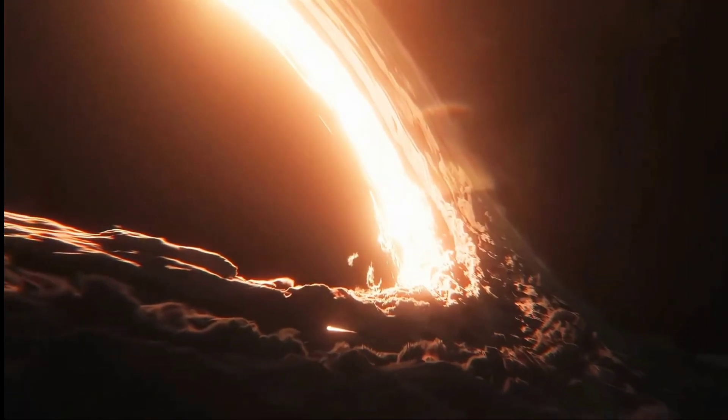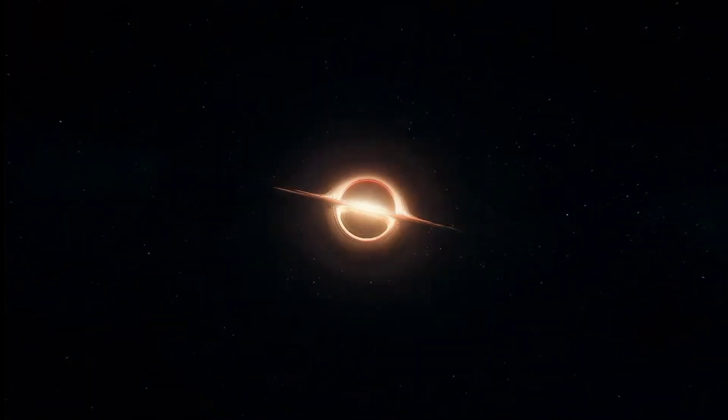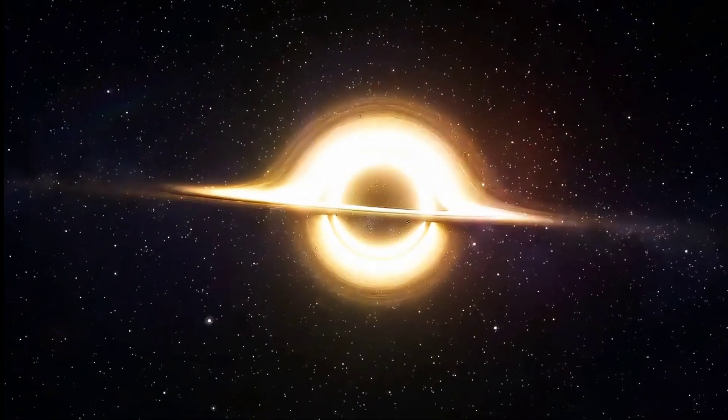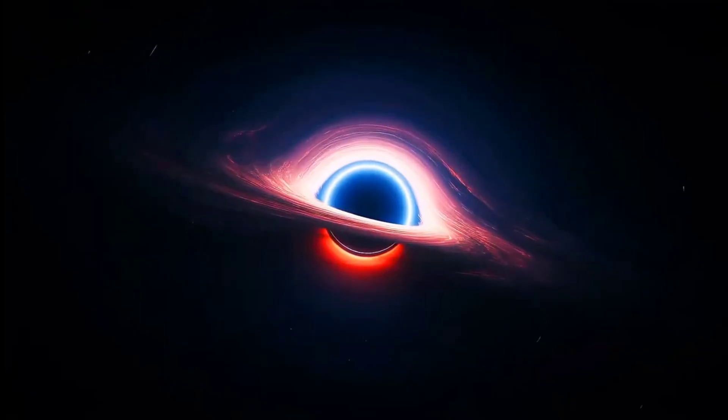Every black hole has a boundary called the event horizon. Once something crosses it, there's no going back. From outside, you'd see stars warping and twisting around the edge in a dazzling ring of light. But as you fall in, you'd start speeding up, gravity pulling you faster and faster.